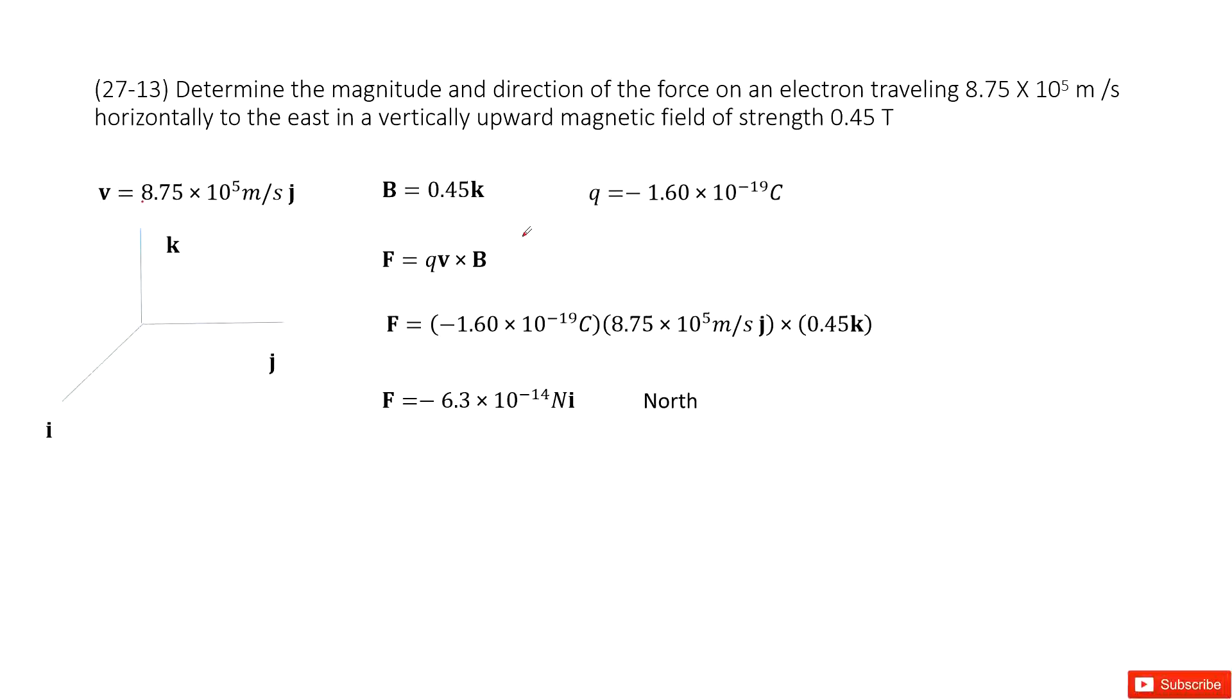We need to determine magnitude and direction of the magnetic force on an electron. It moves to the east with the magnetic field in vertical upward direction.